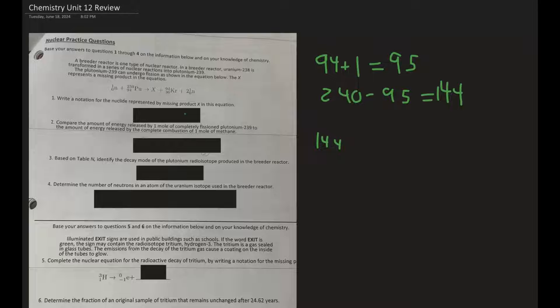Now for the bottom, we have 36 on the right side and 94 on the left side — a difference of 58. So we write 58 on the bottom. This 58 also represents the protons. Because we know the number of protons, even though this may be an isotope, we can determine what the element is.